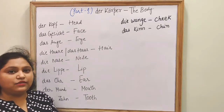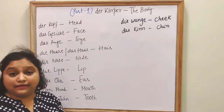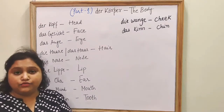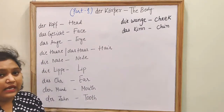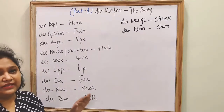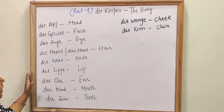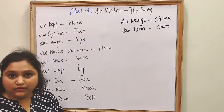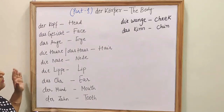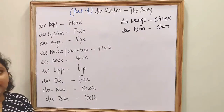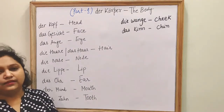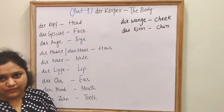As you know, I did the family members with you and I divided it into two parts. So the body parts I am also dividing into two parts. This is part number one, wherein we will be doing some of the body parts. In the next video you can see the other body parts.